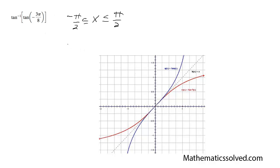So to show you conceptually, because this is within the bounds of negative pi over 2 to pi over 2 for tangent, the answer is going to be negative 3 pi over 8.